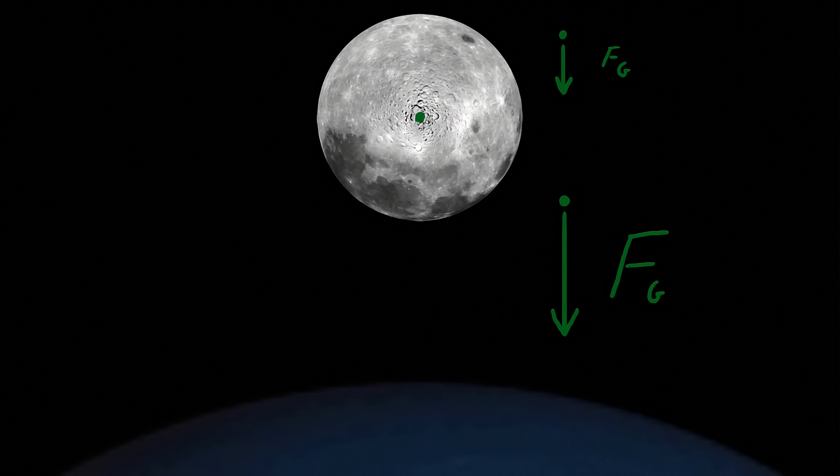But because Earth's gravity is stronger on the near side of the moon, the moon's center of gravity is shifted toward the Earth, like this.